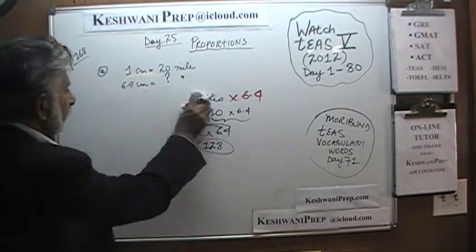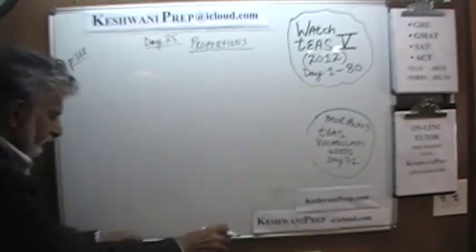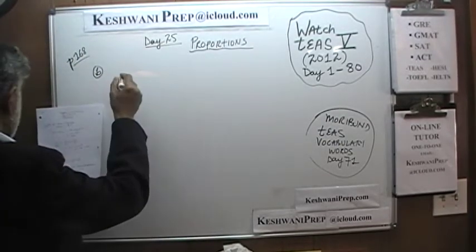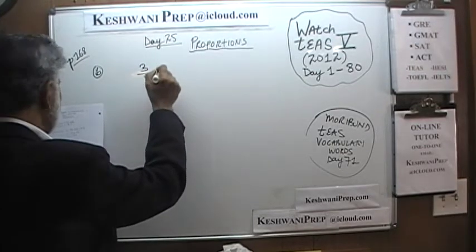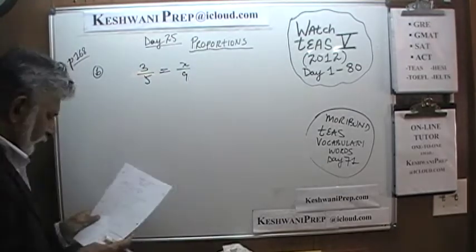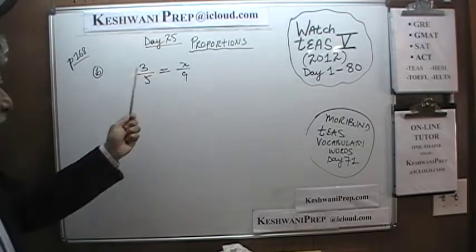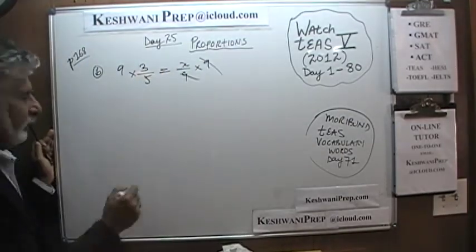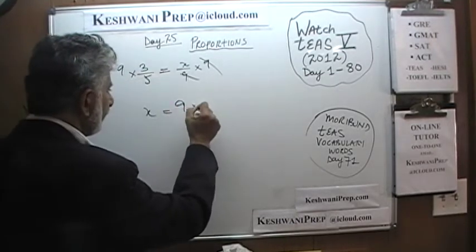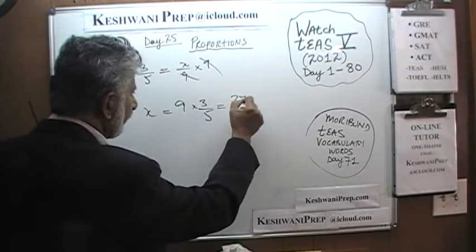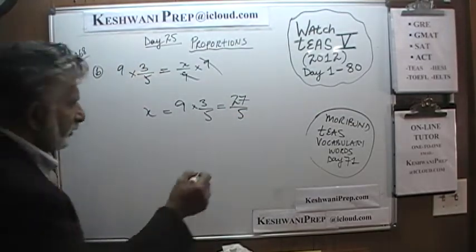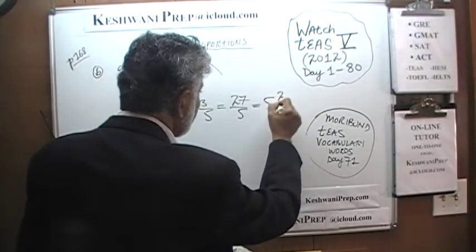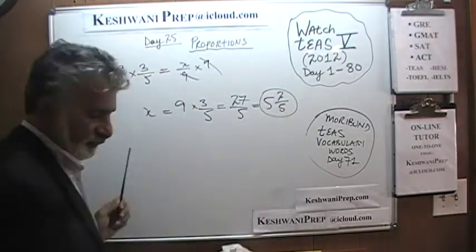Example B: we are told that 3 over 5 equals x over 9. The question is, how much is x? We multiply both sides by 9 to get rid of the 9 on the right side, so x equals 9 times 3 over 5, which is 27 over 5. That works out to 5 with a remainder of 2 — so the answer is 5 and 2 fifths.